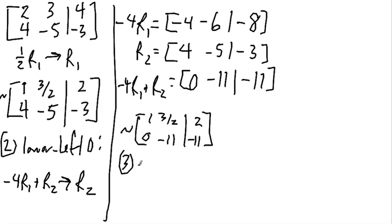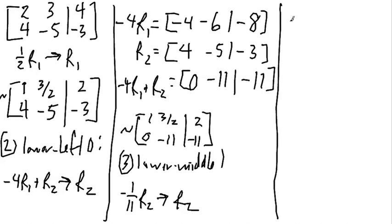Third, I want the lower middle to be a 1. And so to change negative 11 into a 1, I'm going to divide by negative 11. So what I'm going to do is take negative 1 elevenths row 2 and replace row 2 with that. And what that gives me then is the row equivalent matrix, 1, 3 halves, 2, and 0, 1, negative 11 divided by negative 11 gives me 1.